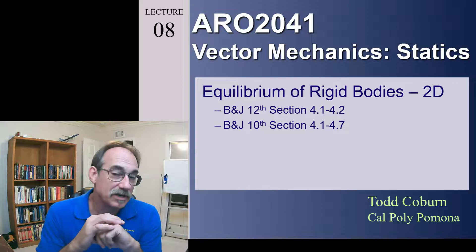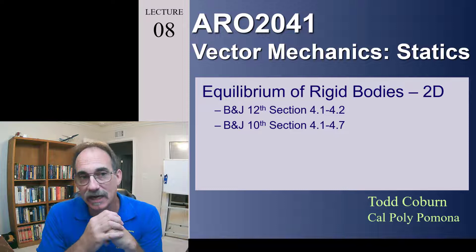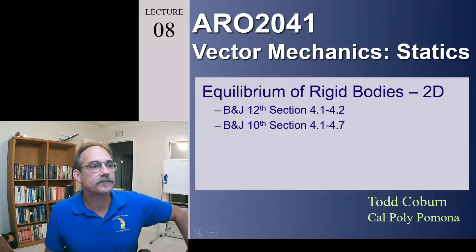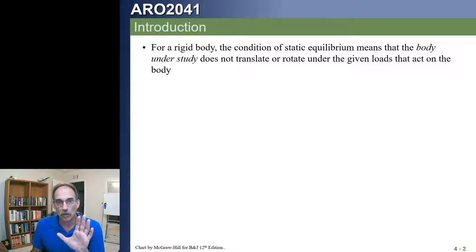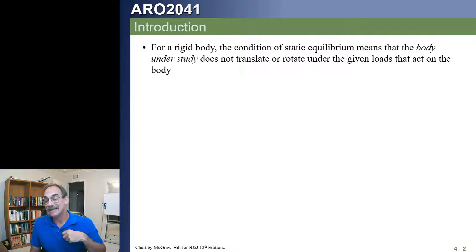This video is on the equilibrium of rigid bodies in two dimensions. We're going to focus on how to analyze those kinds of structures in 2D. We're dealing with statics, which means we're going to assume that nothing moves due to these forces. The summation of forces is zero, the summation of moments is zero — that body does not translate nor rotate.